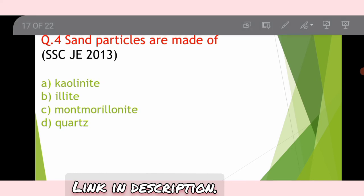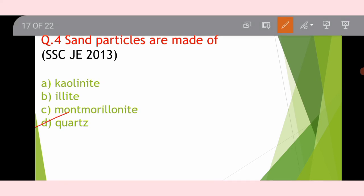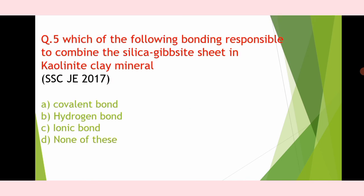Sand particles are made up of quartz mineral. Kaolinite, illite, and montmorillonite are clay minerals. Question: Which bonding is responsible for combining the silica and gibbsite sheets in kaolinite clay mineral? There are 4-3 type bonds — covalent, hydrogen, and ionic. The correct answer is hydrogen bond.